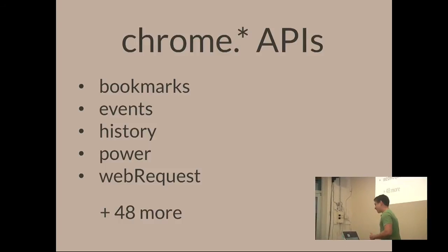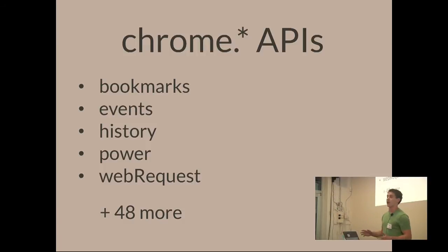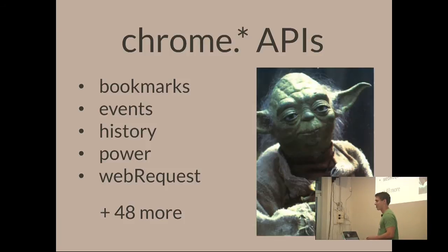Then you get into shadier APIs. You can keep the user's computer awake with the Power API, you can intercept web traffic, and you can modify it with the Web Request API. There are 48 other APIs — I'm not going to go through them all. Basically, Chrome gives you a lot of power; you can do whatever you want, just don't be malicious and use it wisely.